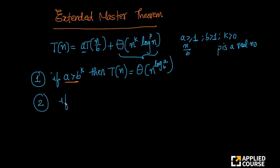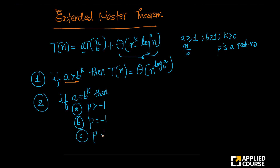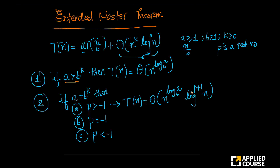Case 2, slightly more tricky: if A is exactly equal to b^k, then there are three sub-cases. Case 2a: if p is greater than minus 1, then T(n) is theta of n^(log_b(a)) · log^(p+1)(n). The only place where you have this log^(p+1)(n) term is when this equality holds. When I write log^p n, it means log(n) raised to the power p.